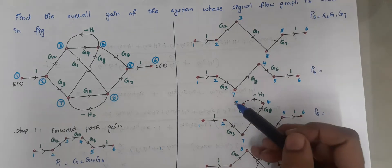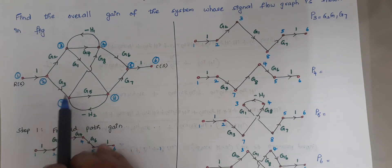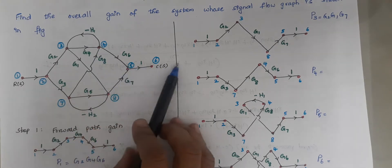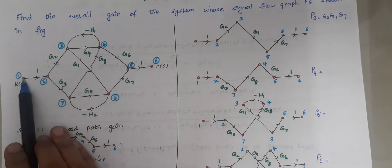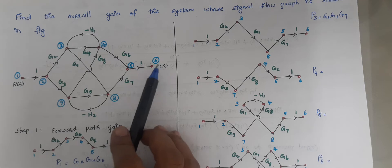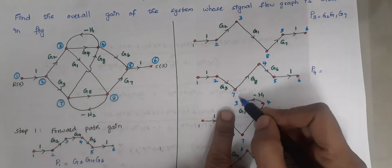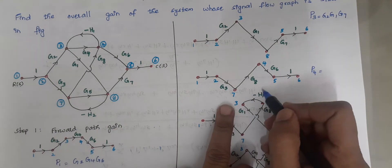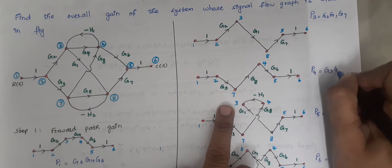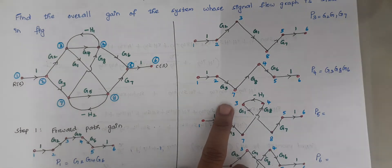The next forward path considers nodes 1, 2, 7, 4, 5, and 6. This is also a forward path. The gain value will be G3 × G8 × G6, so P4 = G3 · G8 · G6.